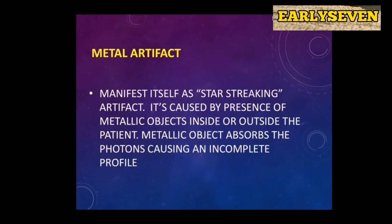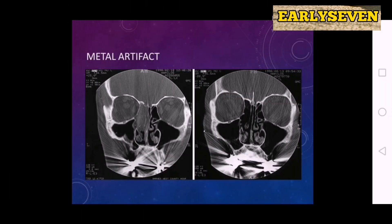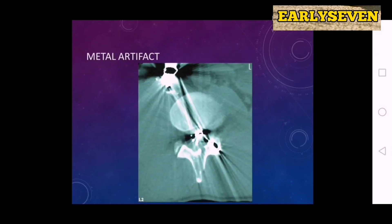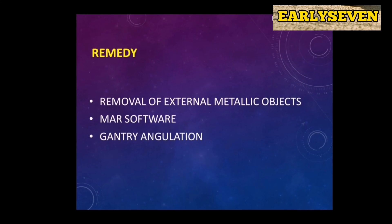Another type of artifact is the metal artifact. It manifests itself as a star-streaking artifact caused by the presence of metallic objects inside or outside the patient. The metallic object absorbs the photon, causing an incomplete profile. The remedy for metallic artifact is the removal of external metallic objects, the use of MARS software (metallic artifact removal software), and gantry angulation.